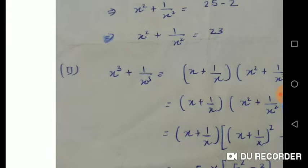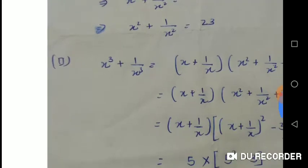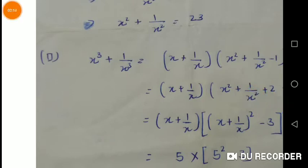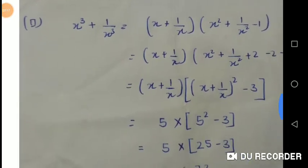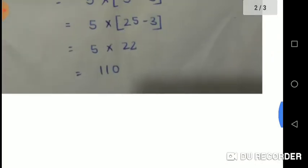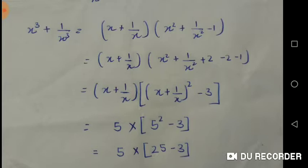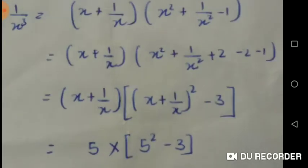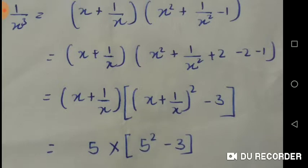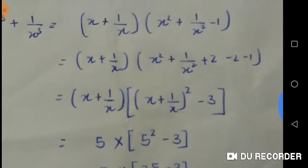Next is x³ + 1/x³. I will use the formula a³ + b³ = (a + b)(a² + b² - ab). I expand that one. This is (x + 1/x)³ = x² + 1/x² + 1/x³ minus (x + 1/x) times 1. I make it in the form of (x + 1/x)², so for that I add 2 and subtract 2.